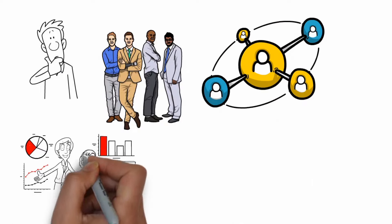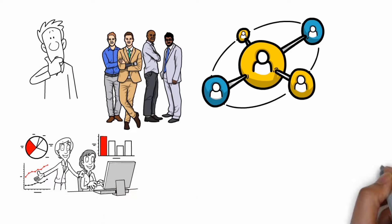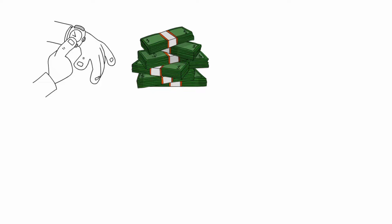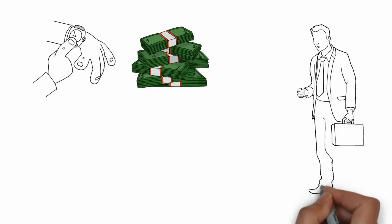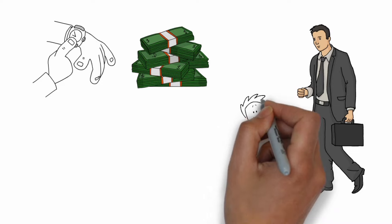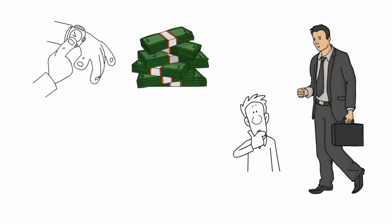Wealthy people understand that time is an essential component of wealth creation, allowing their money to develop and expand over time. On the other hand, rich people may be more concerned with immediate gratification and the present moment without contemplating the long-term consequences of their financial decisions.